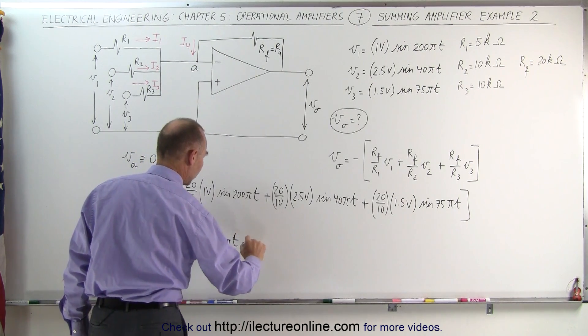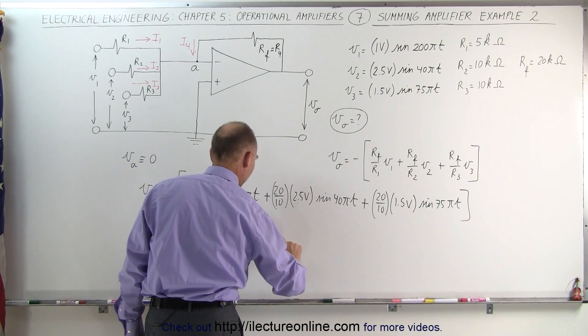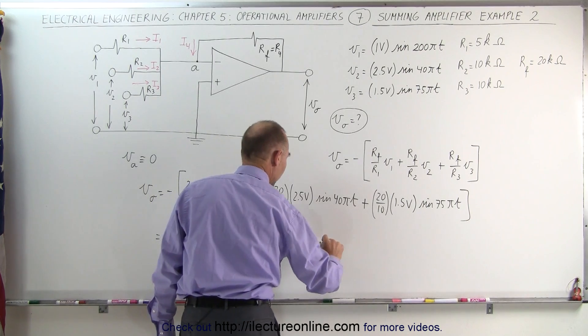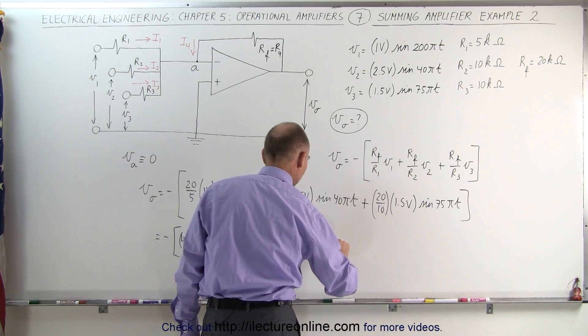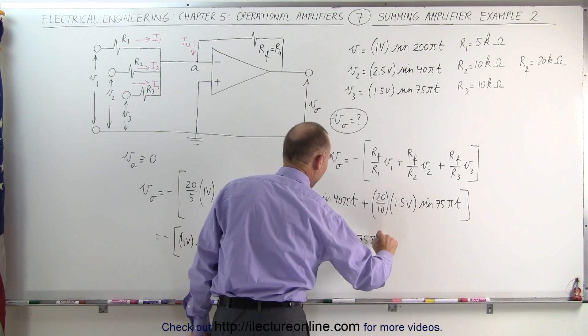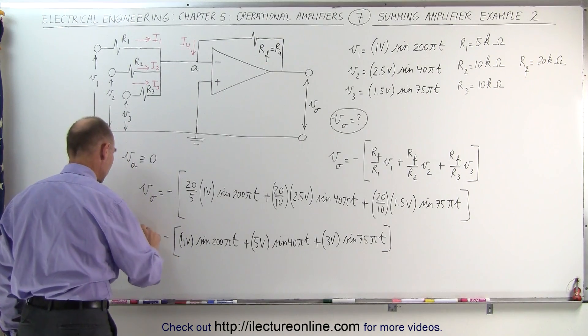Plus 2 times 2.5, which is 5 volts times the sine of 40 pi T, plus 2 times 1.5, which is 3 volts times the sine of 75 pi T. And notice that everything is multiplied times the negative 1 here, so the output voltage will be the negative of that.